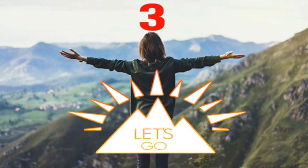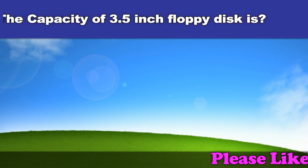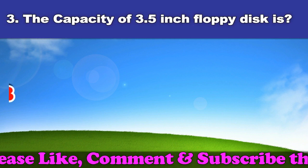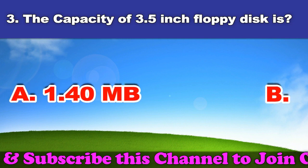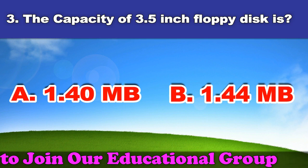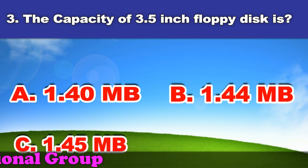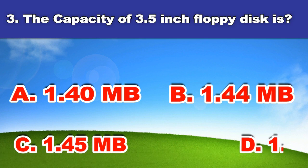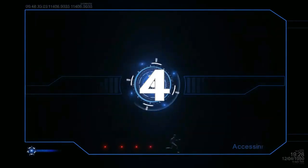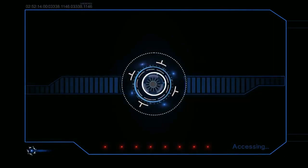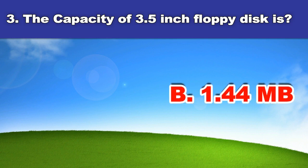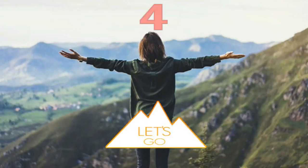Third question: The capacity of a 3.5-inch floppy disk is. A. 1.40 megabytes. B. 1.44 megabytes. C. 1.45 megabytes. D. 1.41 megabytes. And the answer is 1.44 megabytes.